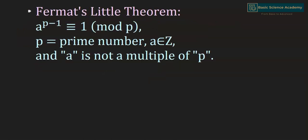According to Fermat's Little Theorem, a to the power of p minus 1 is congruent to 1 mod p, where p is a prime number and a belongs to the integers and a is not a multiple of p.